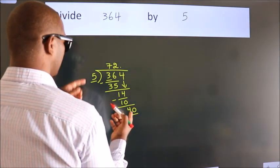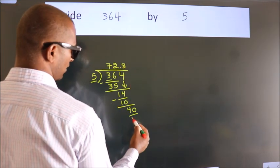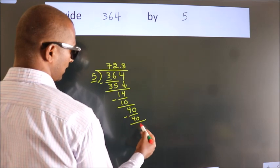When do we get 40 in the 5 table? 5 times 8 equals 40. Now we subtract. We get 0.